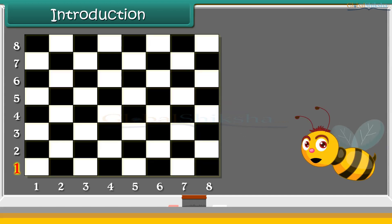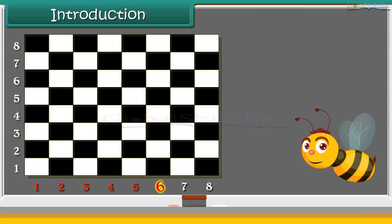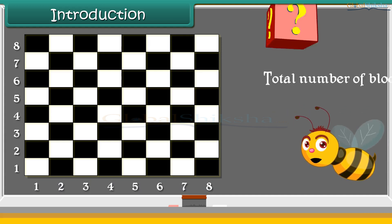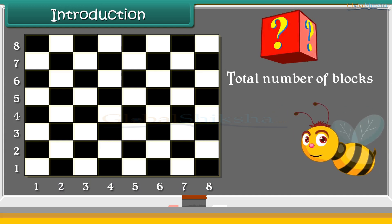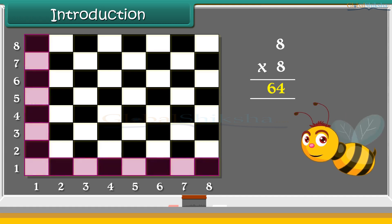Introduction: A chess board has 8 rows and 8 columns. Can you tell the total number of blocks in the board? Yes, we can calculate by multiplying both the numbers. Let's study about multiplication.